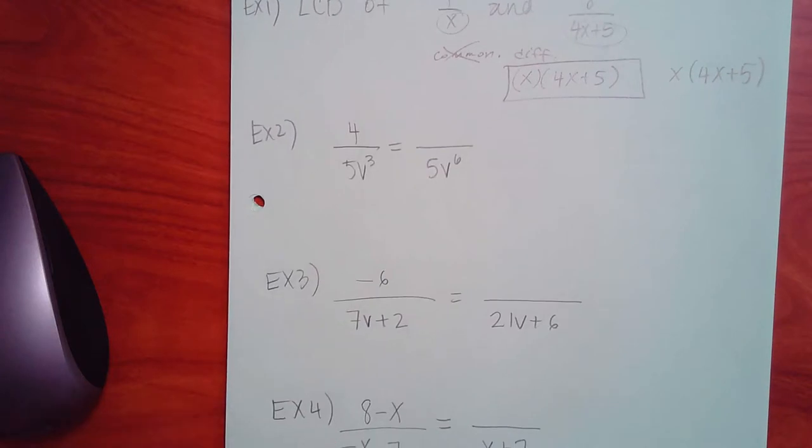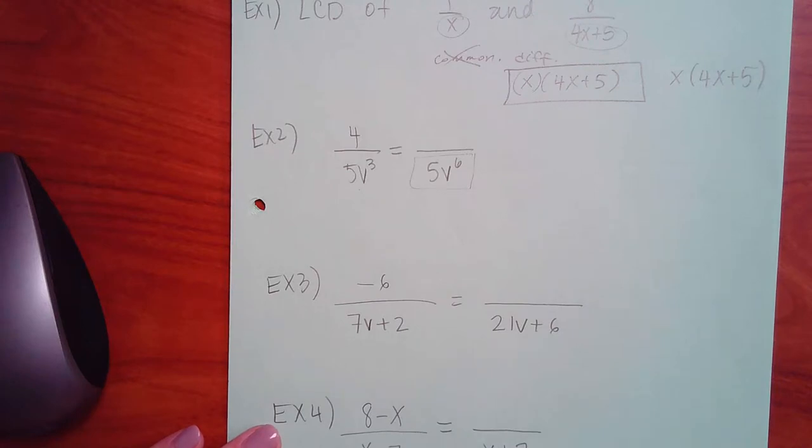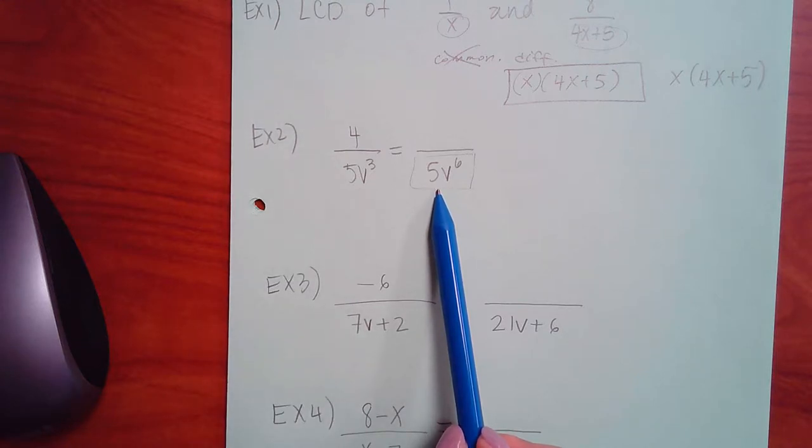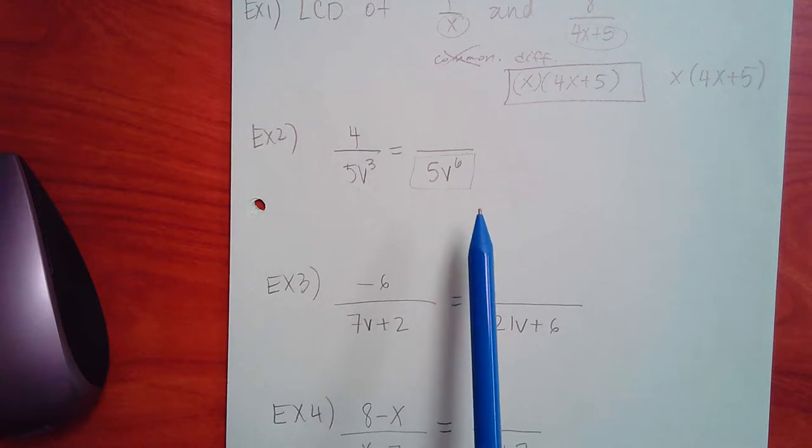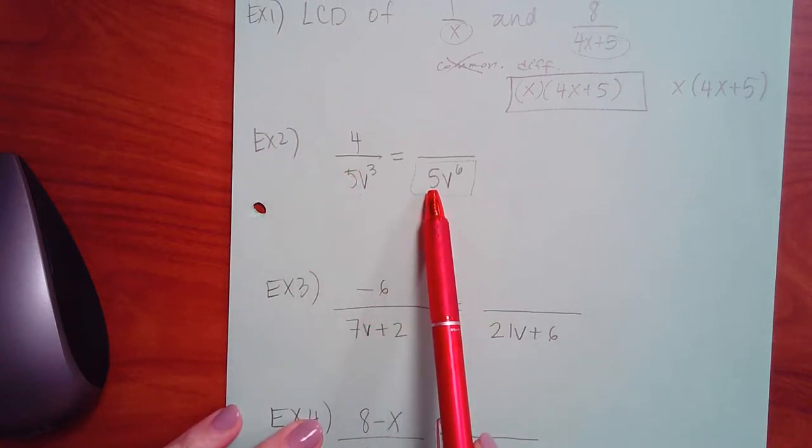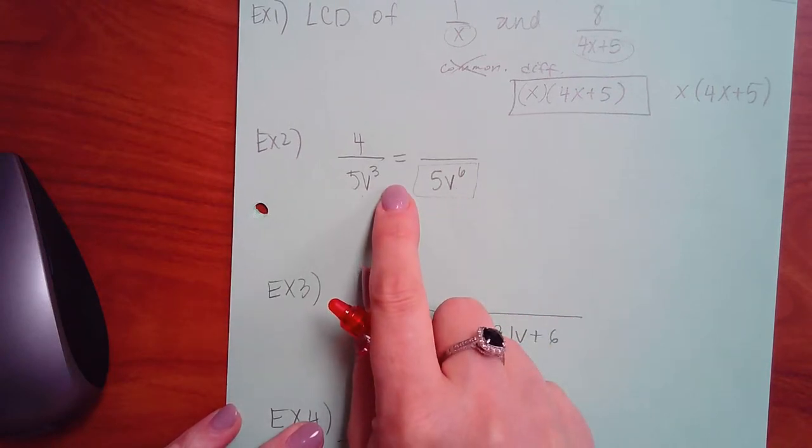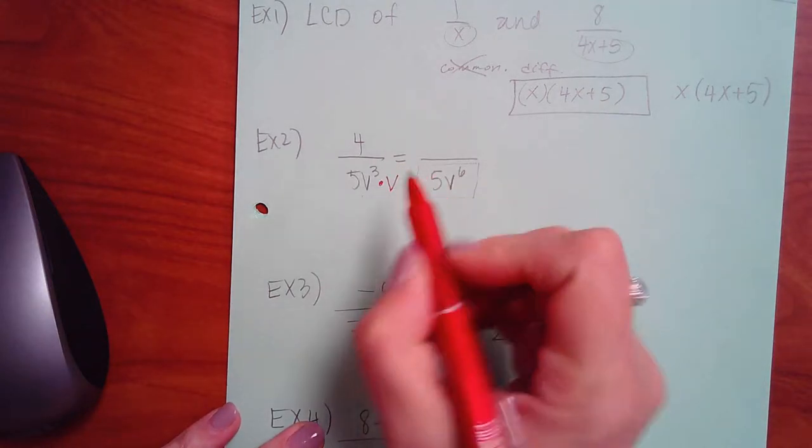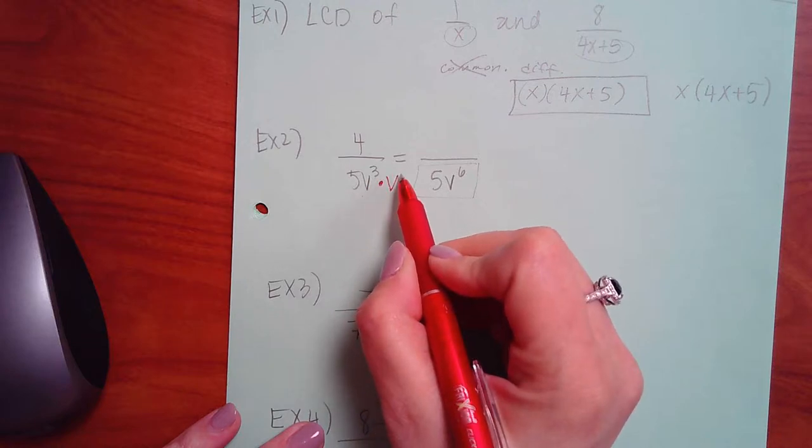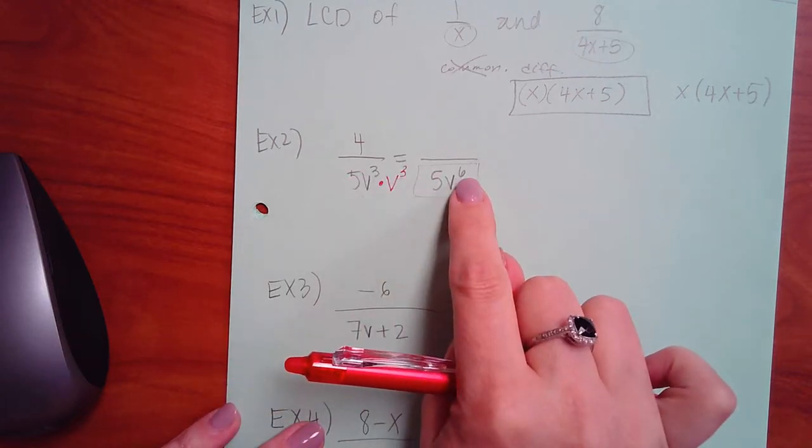So then they start getting in before we add and subtract, they start talking about how to write equivalent fractions because you may have this in one of your fractions and you may know that this is the common denominator. In this case, I already have the 5, and I already have v cubed, but I need v6. I need v cubed, so then 3 plus 3 will give me the 6.